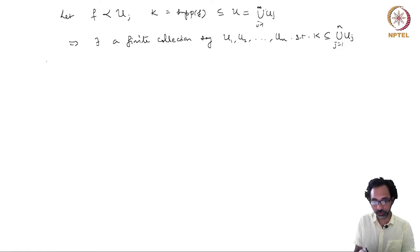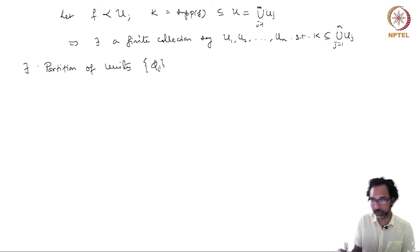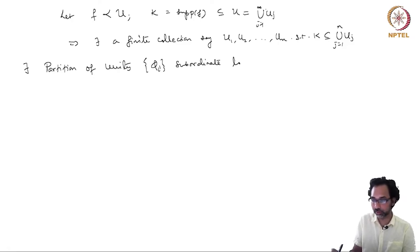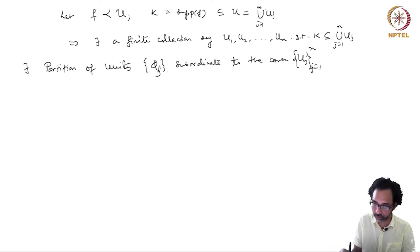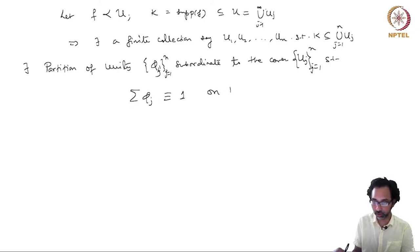Now I will use the existence of a partition of unity: there exists a partition of unity {φ_i} subordinate to the cover {U_j}, j = 1 to n, such that Σ_{j=1}^{n} φ_j is identically equal to 1 on K.